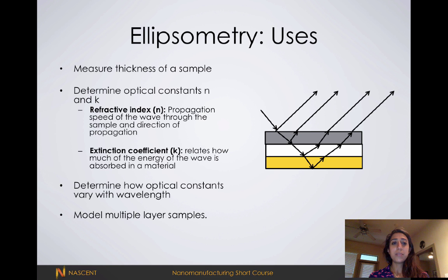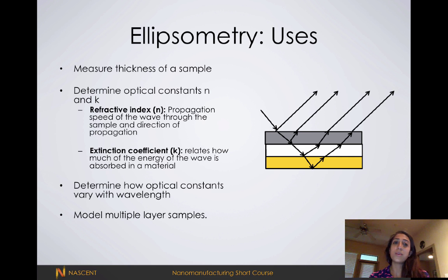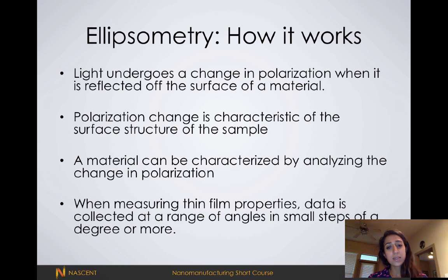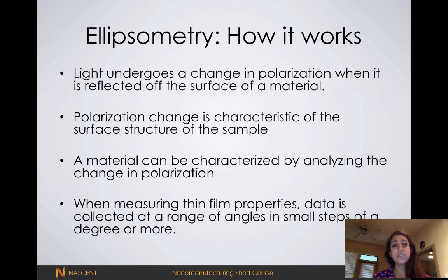A technique commonly used to measure the thickness of a sample is ellipsometry. It can also determine optical constants such as the refractive index or extinction coefficient of a material, and can be used to model multiple layers — for example, titanium nitride on top of hafnia on top of silica. Ellipsometry works by shining light onto the material and analyzing the change in polarization of that light. Polarization is characteristic of the material — depending on what you're analyzing, light will be reflected, absorbed, or refracted. We measure the change in polarization at various angles, and from this data generate a model that gives us thickness and other optical properties.